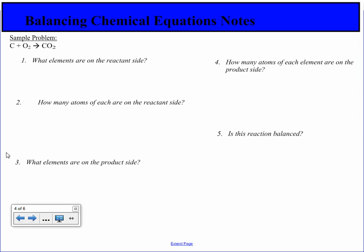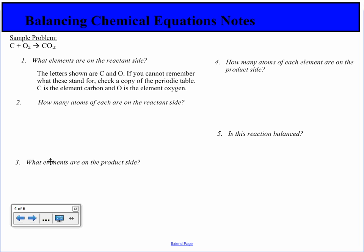First we ask, what elements are on the reactant side? The letters shown are C and O. If we cannot remember, we can check the periodic table and find that C is the element carbon and O is the element oxygen.